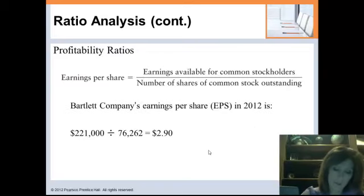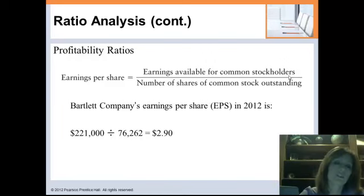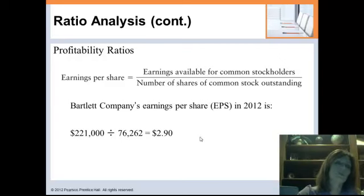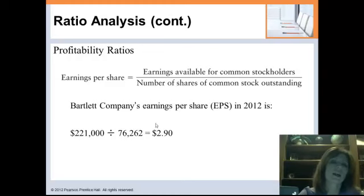Earnings per share is a very popular measurement for a company's stock. We take the earnings available for common stockholders and divide by the number of shares outstanding, giving a measure of how much the company is making based on our investment. For Bartlett, the company made $221,000 with 76,000 shares outstanding, giving about $2.90 per share. That doesn't mean every stockholder received a check for $2.90, because the company may have retained most of it, but it gives us an idea of how much money the company is making per share.